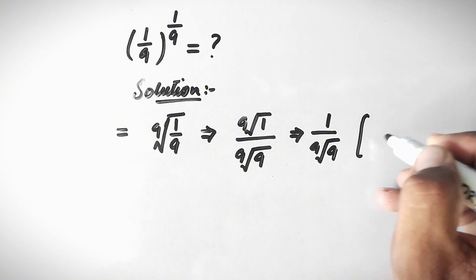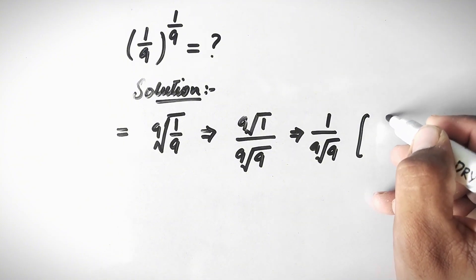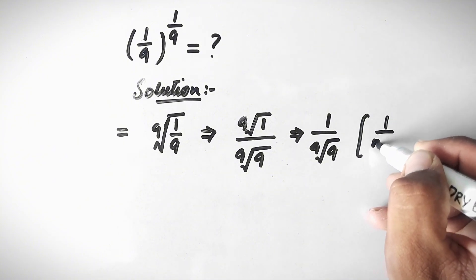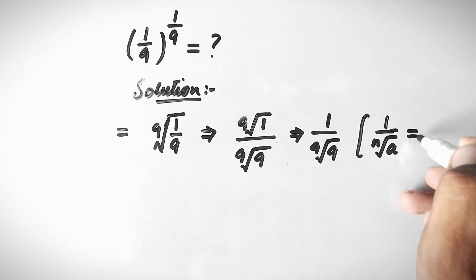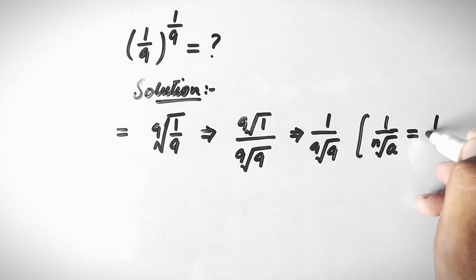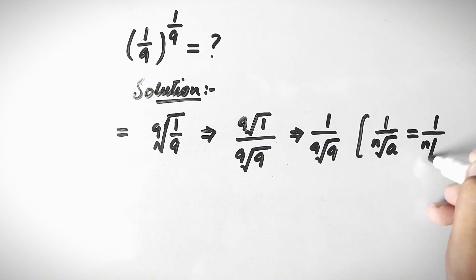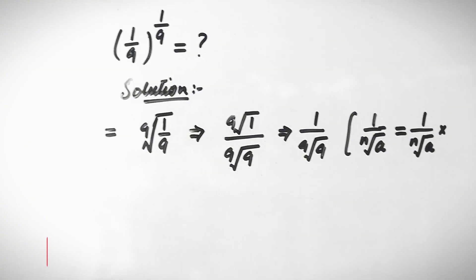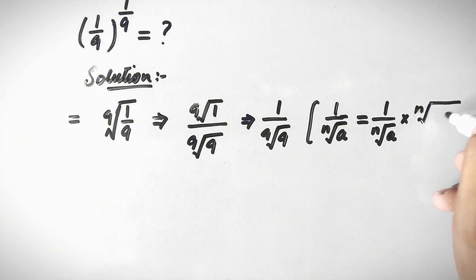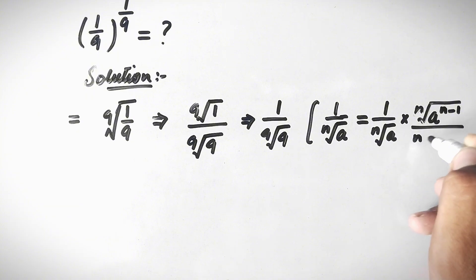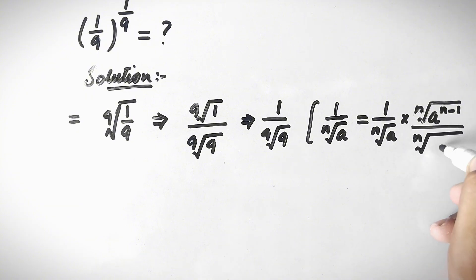Now we apply a rationalization property: 1 over the nth root of a equals 1 over the nth root of a, multiplied by the nth root of a to the power (n minus 1), divided by the nth root of a to the power (n minus 1).